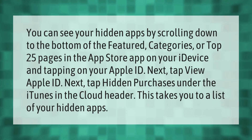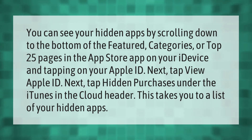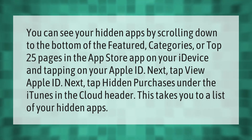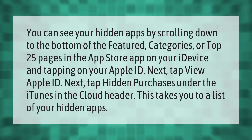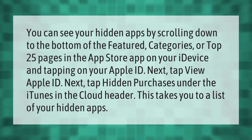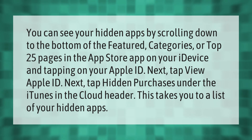You can see your hidden apps by scrolling down to the bottom of the Featured Categories or Top 25 pages in the App Store app on your iDevice and tapping on your Apple ID. Next, tap View Apple ID, then tap Hidden Purchases under the iTunes in the Cloud header. This takes you to a list of your hidden apps.